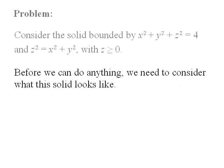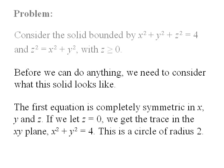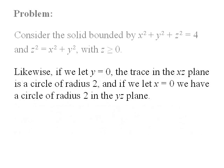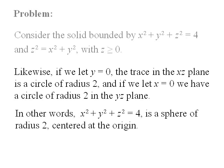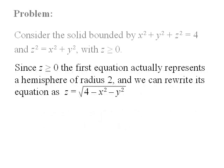Before we can do anything, we need to consider what this solid looks like. The first equation is completely symmetric in x, y, and z. If we let z equal 0, we get the trace in the xy plane: x squared plus y squared equals 4, which is a circle of radius 2. Similarly, the traces in the xz and yz planes are also circles of radius 2. In other words, x squared plus y squared plus z squared equals 4 is a sphere of radius 2 centered at the origin. Since z is greater than or equal to 0, it represents a hemisphere of radius 2, and we can rewrite its equation as z equals the square root of 4 minus x squared minus y squared.